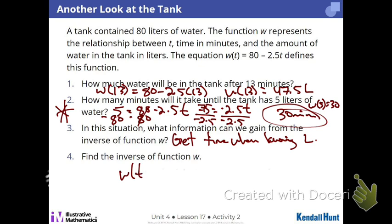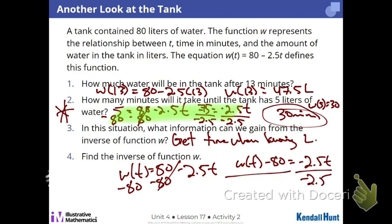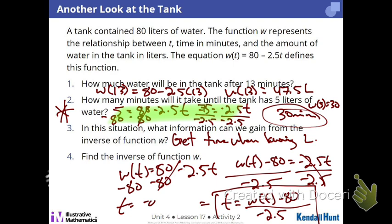So, our original function is W of T equals 80 minus 2.5T. And remember, big idea to get inverse function, we switch independent and dependent variables. So, instead of W of T alone, I need T alone. So, just like I did up here, it's going to be the same process. I'm going to subtract 80 from both sides. So, that means W of T minus 80 equals negative 2.5T. Divide both sides by negative 2.5. So, if I want to know the time, I put in the liters, subtract 80, divided by negative 2.5, it'll always give me the time. Now, there's some things you could do here. Like, this is the same as negative 0.4 of W of T plus, what's 80 divided by 2.5? I think it's 32.